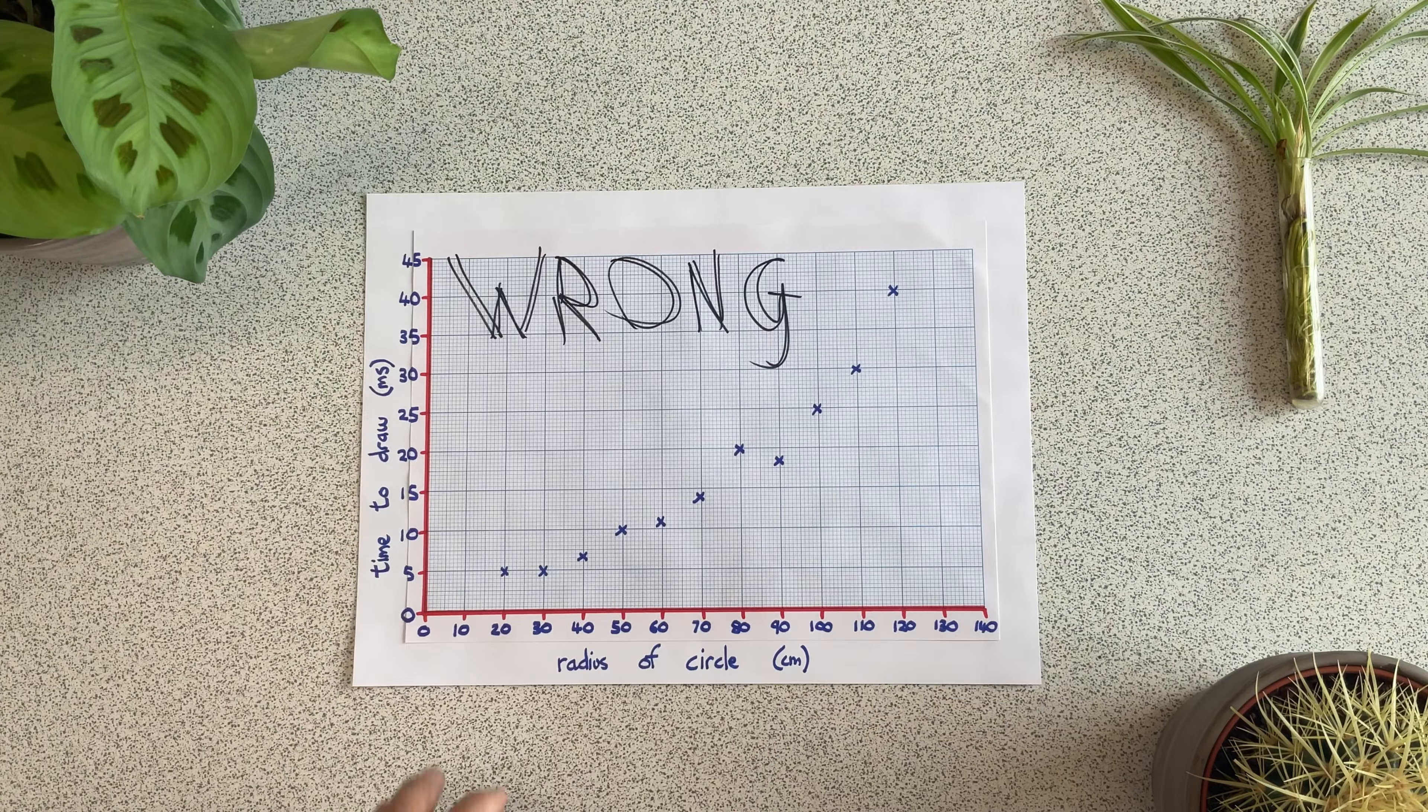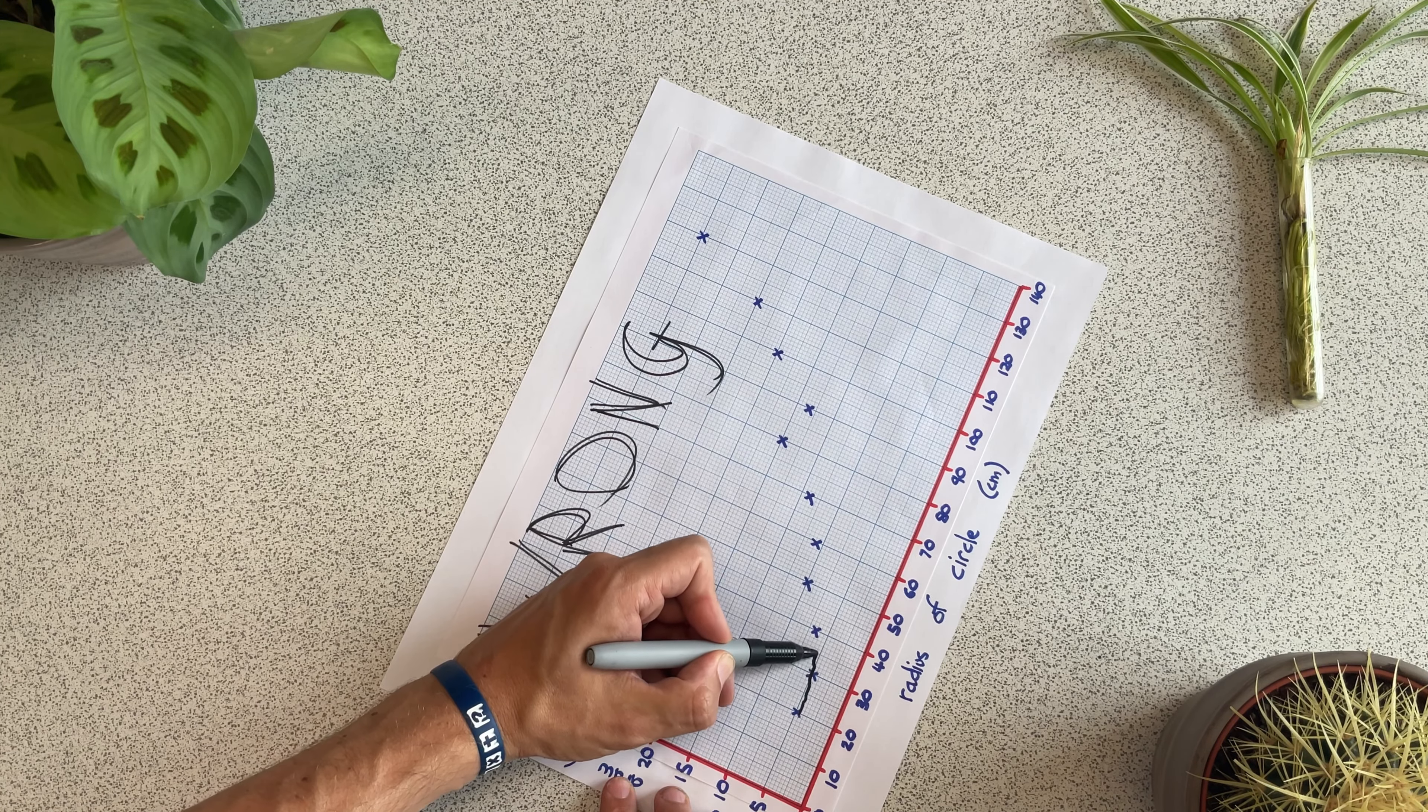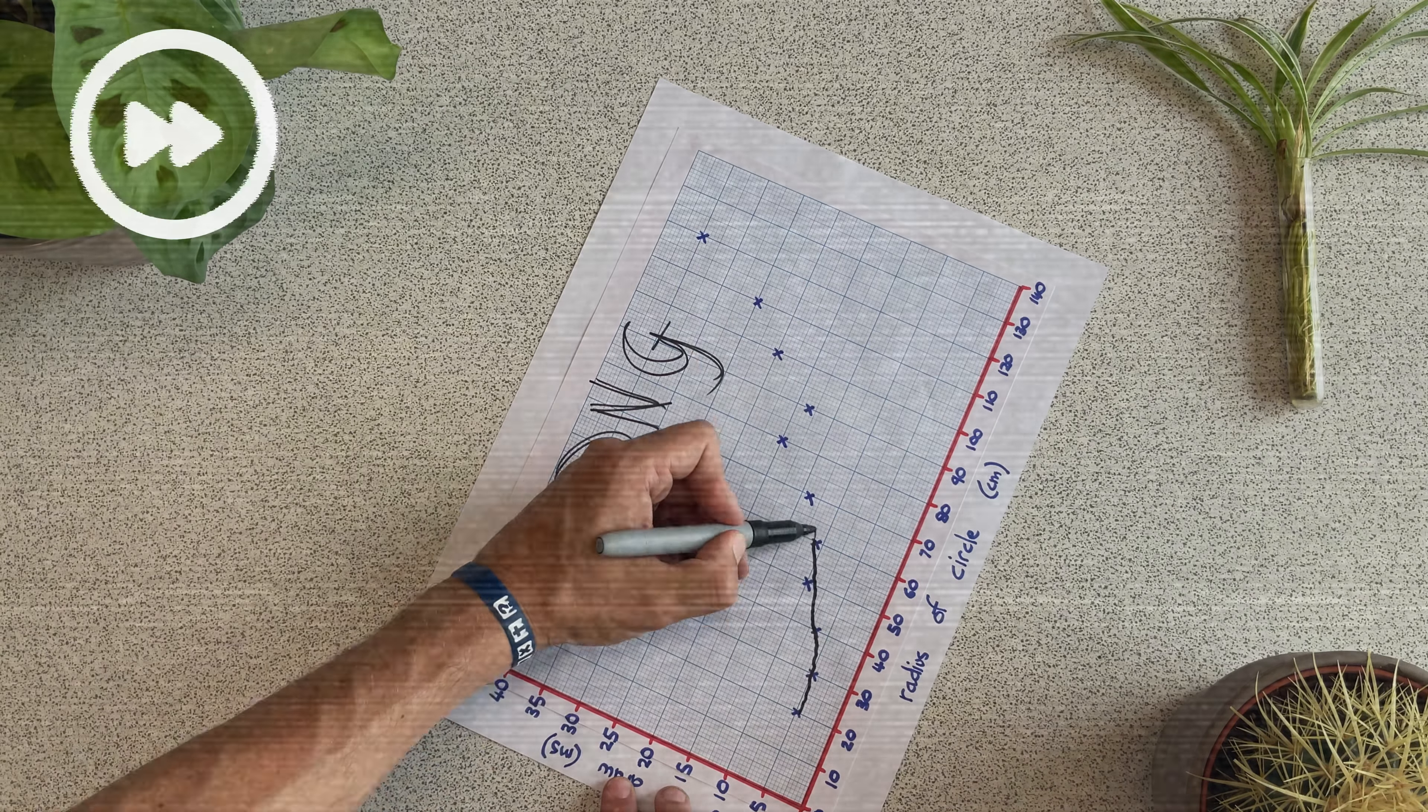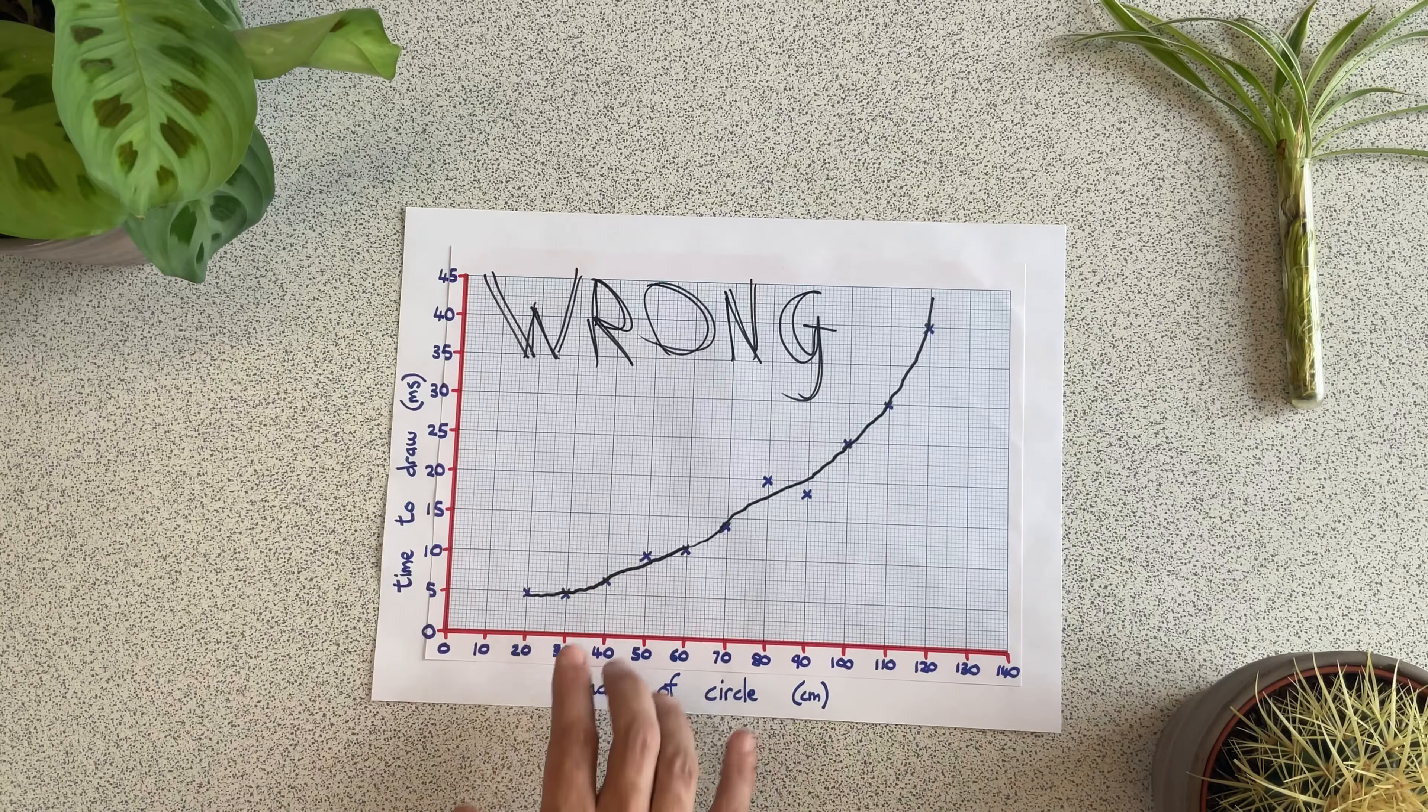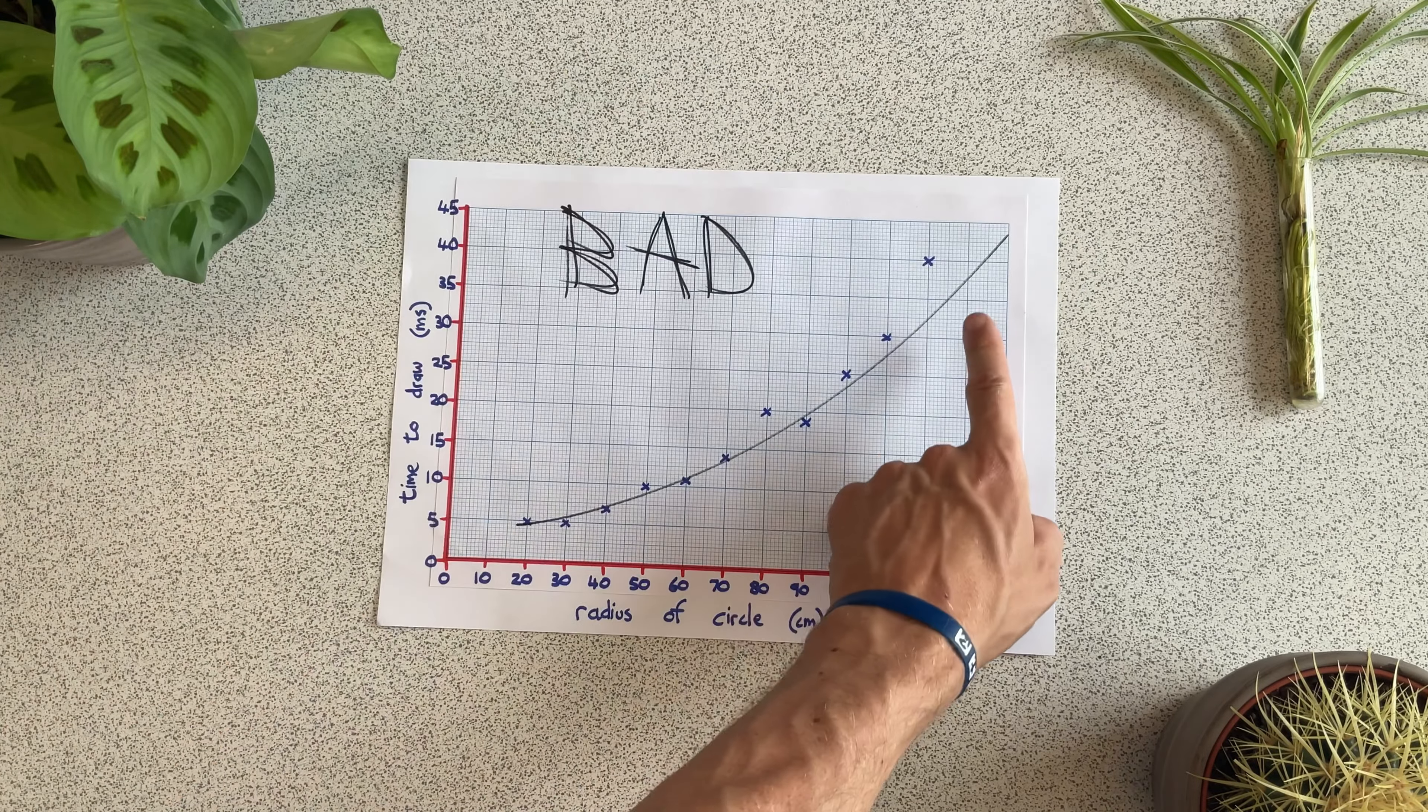Curved lines of best fit are drawn freehand, and this leads to four more common mistakes. If you draw your line of best fit slowly, it ends up looking really wobbly. And if you draw it too fast, you end up missing the points.